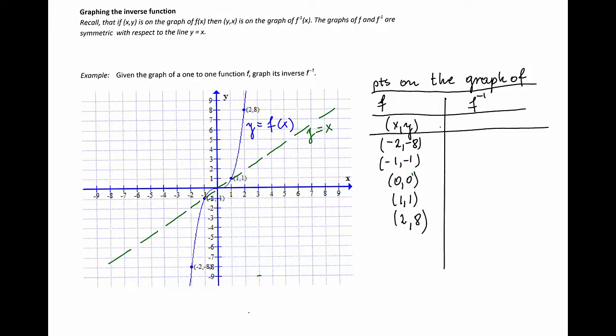Since function f inverse will switch x and y's, the points on the graph of function f inverse are going to be y and x. So if a point was on the graph of f, then the switched point is going to be on the graph of f inverse.